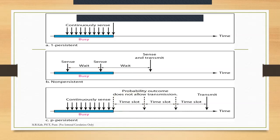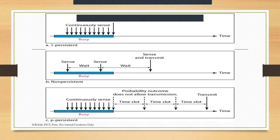Let us revise the three methods. One-persistent is actually a type of P-persistent where the probability value is 1 — meaning 100% of the time, whenever the channel is found idle, the station will send the data frame. In P-persistent, after continuously sensing the channel, as soon as it finds it idle, it checks the probability value. If that data frame falls in the category of frames to be sent, it will be sent; otherwise the station waits for a fixed time slot. This process continues until the probability value allows the station to send the data.